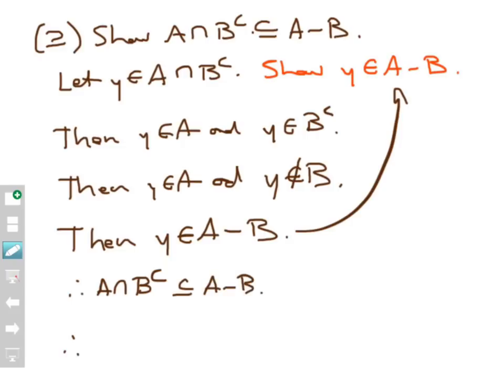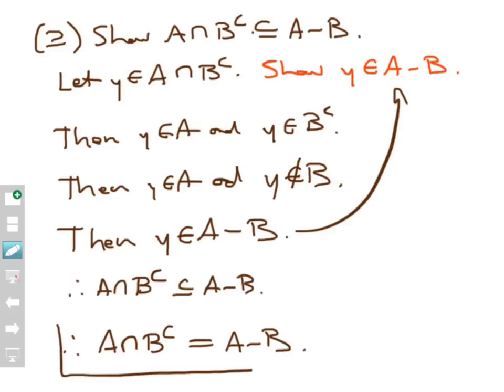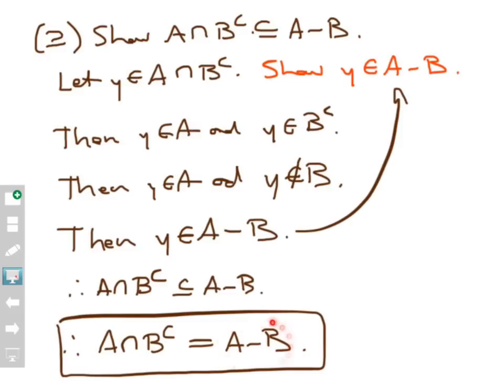The entire theorem is now proven. I've shown that one set is included in the other and vice versa, so A intersect B complement is actually equal to A minus B. This is a fact we can take to the bank. Anytime I see A minus B in set theory, I can rewrite that as an intersection involving a complement — A intersect B complement. That becomes very useful, and we'll see this show up in later screencasts.